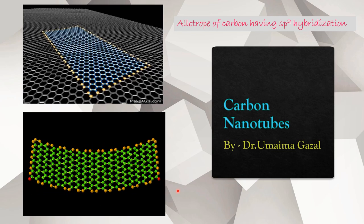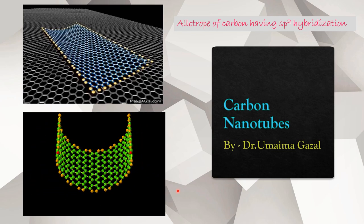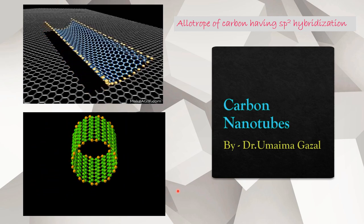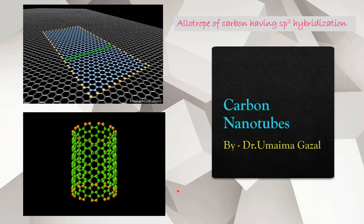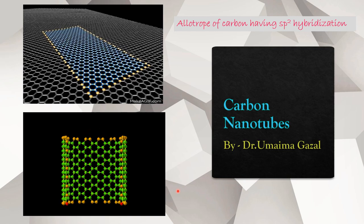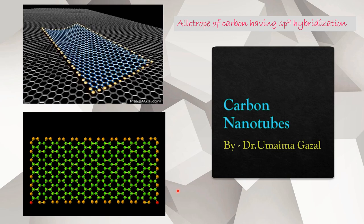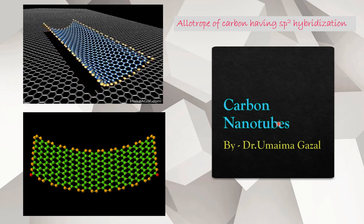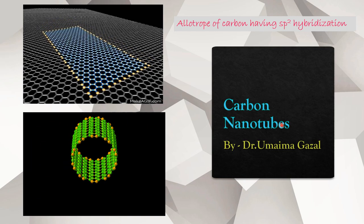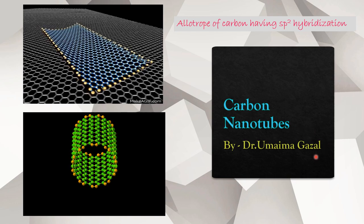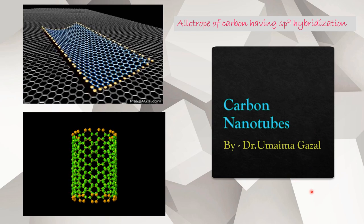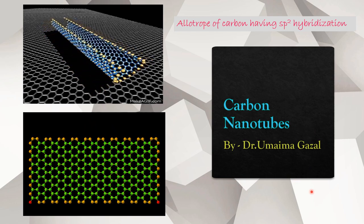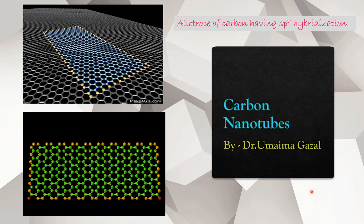In nanotubes, the edge of the graphene sheets are fused to form a cylindrical tube with a high aspect ratio. These carbon nanotubes are also known as bucky tubes and these are the member of a fullerene family.